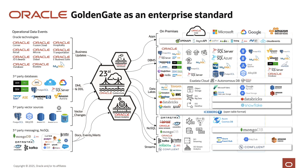GoldenGate has more than 1,000 supported combinations of data platforms, chipsets, operating systems, applications, and clouds. Although some casual observers may think that GoldenGate is mainly for Oracle databases, the truth is that approximately half of GoldenGate's massive global ecosystem uses it for message streaming ingestions, lake house ingestions for non-Oracle databases with NoSQL and non-Oracle cloud use cases. In fact, many of the top brands in the world have standardized on GoldenGate as their one-stop shop for all real-time data use cases.